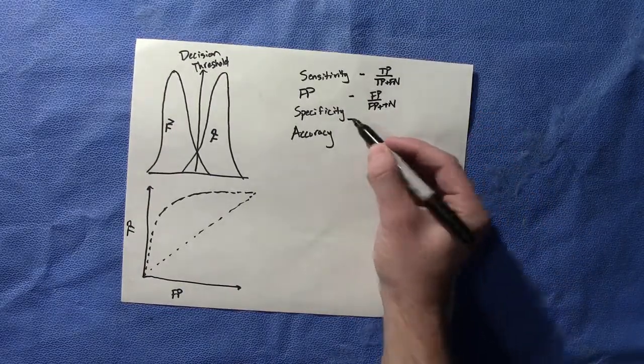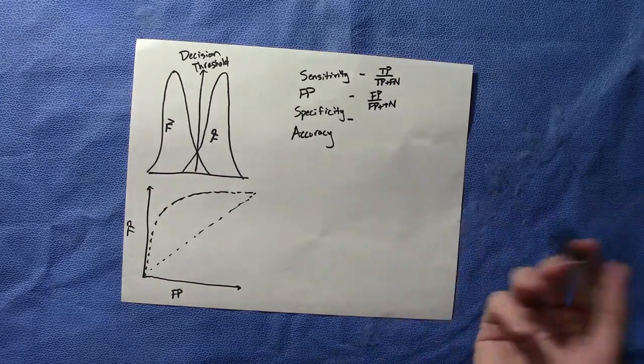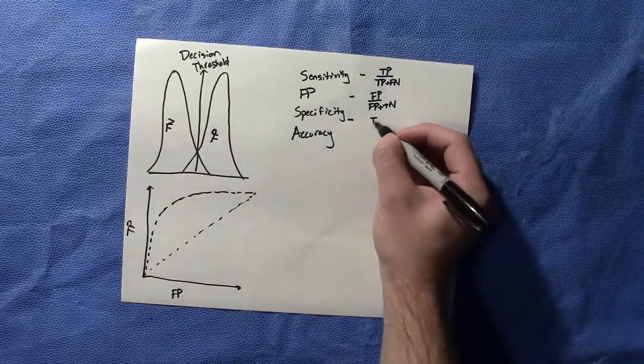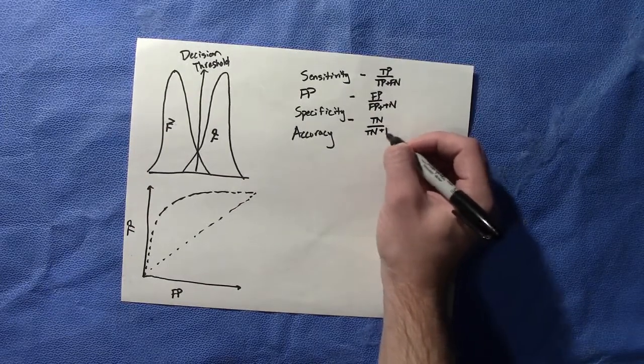Next we have our specificity. That is calling something normal when it actually is. That is our true negative over our true negative plus false positive.